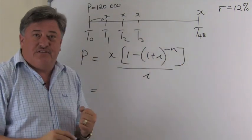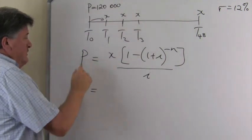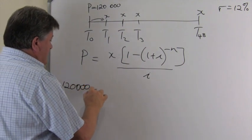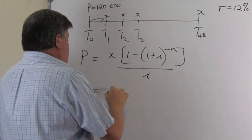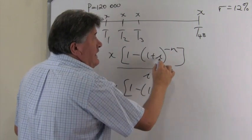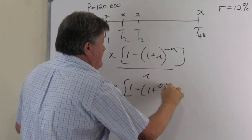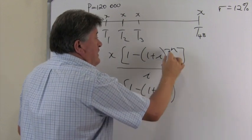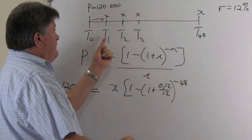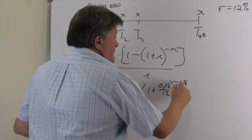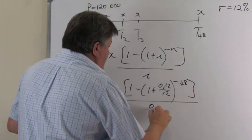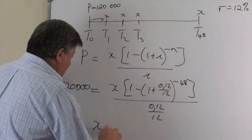Now, for substitution. First of all, my P is 120,000. 120,000 is equal to the X, I don't know, 1 minus 1 plus the I is 0.12 over 12. And then, the number of payments, of course, 48, because from 1 up to 48. With the negative, over my I, which is 0.12 over 12.